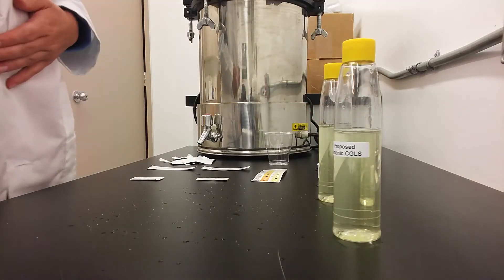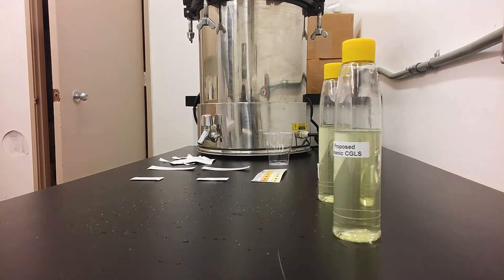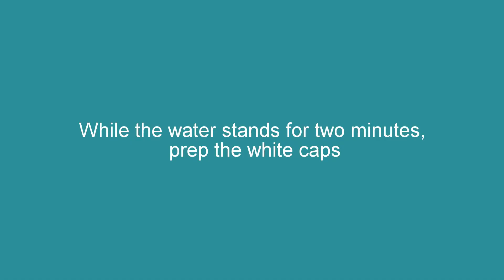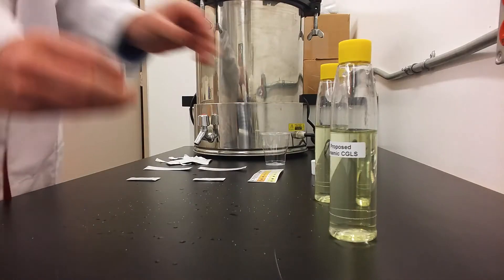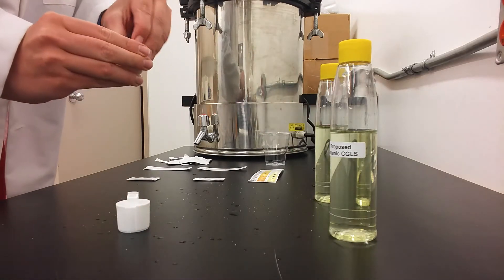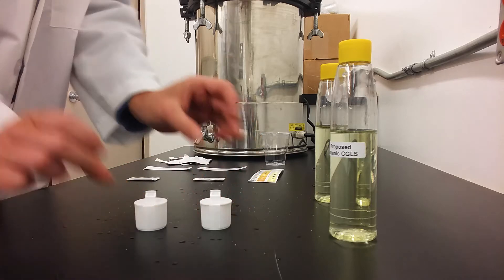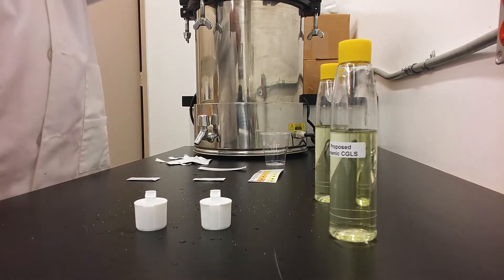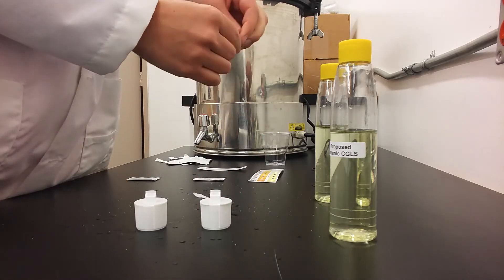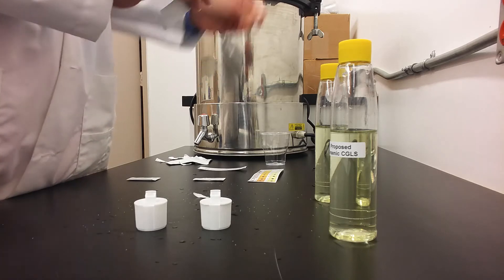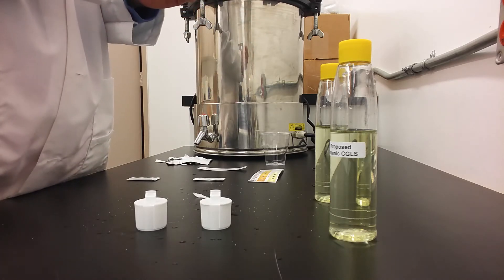We will now let the bottles stand for two minutes. Insert the arsenic quick test strips into the white caps included in the kit, opening from the side that says open, being careful not to touch the cotton pad at the bottom of the indicator strip.